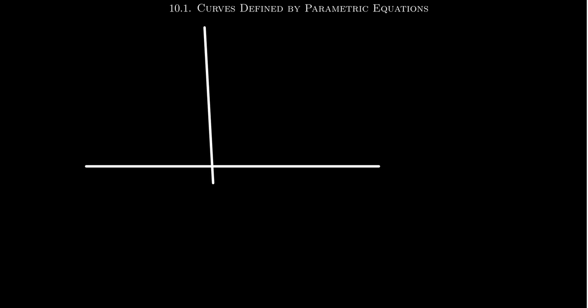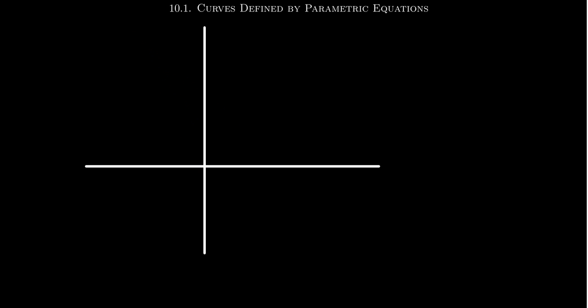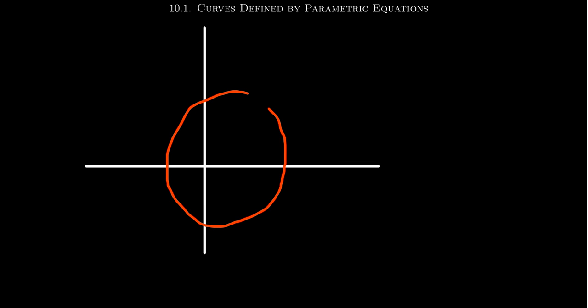To begin our discussion, we have to first talk about what one means by a function. We've seen many examples of functions where we take our x and y-axis and draw a picture. A line is a function because it passes the vertical line test. A parabola is a function — passes the vertical line test. A circle is not a function because it doesn't pass the vertical line test.